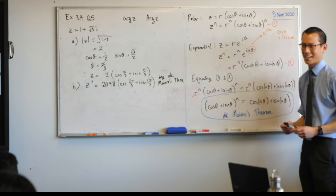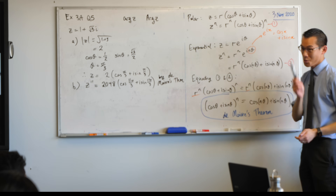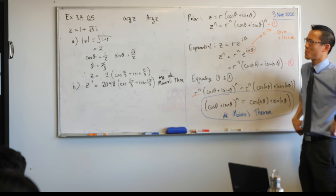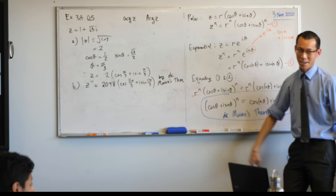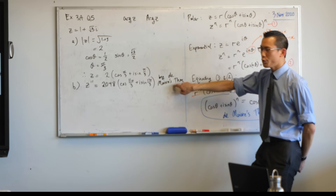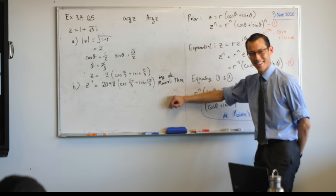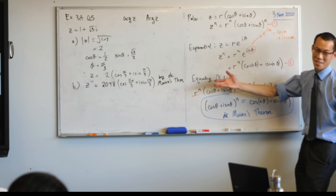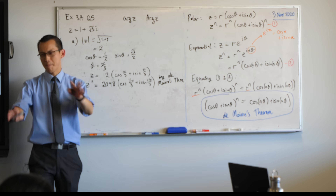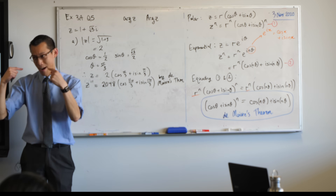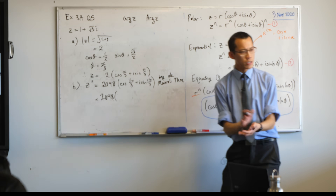Is it necessary when doing a question about de Moivre's theorem to always say so and quote it? Let me answer by asking: when you first learned about hypotenuses in year 7 and 8, did you always have to mention Pythagoras every time? The answer is yes, you should have been. I'm writing this because you should be writing it too, especially because it's new. If you don't write it, you're not clearly communicating your reasoning, and that may cost you marks.